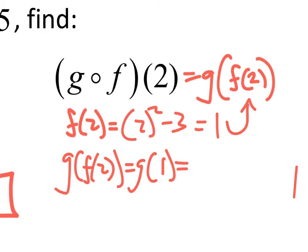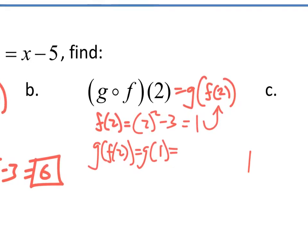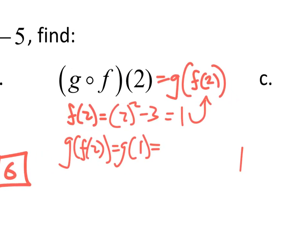We plug that in for f of 2. So g of f of 2 is really just g of 1. We use the g function, which is x minus 5. So we have 1 minus 5, which is negative 4.